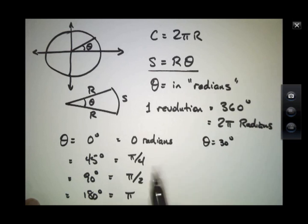30 degrees is 1 third of 90 degrees, so that's pi over 6. 60 degrees is 2 thirds of 90, and that would be pi over 3, and so on.